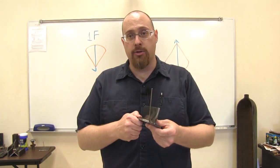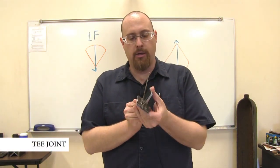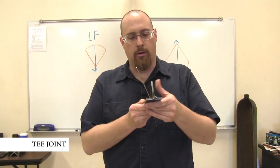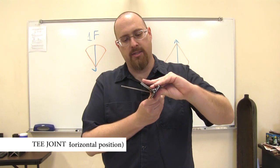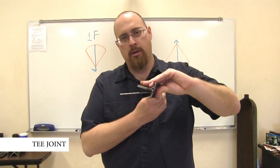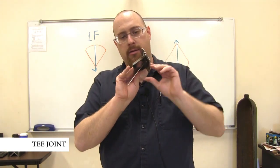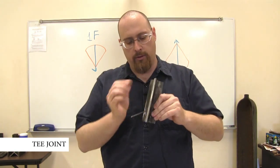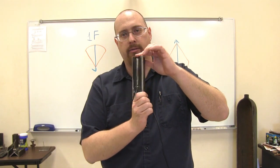Alright, here's our T joint. When we take our T joint our flat is here. Our horizontal is this area. Our overhead is like this. And then our vertical once again is standing up anywhere like this.